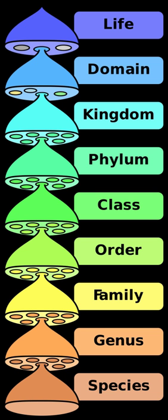The naming of families is codified by various international bodies using the following suffixes. In fungal, algal, and botanical nomenclature, the family names of plants, fungi, and algae end with the suffix "-aceae", with the exception of a small number of historic but widely used names including Compositae and Gramineae.